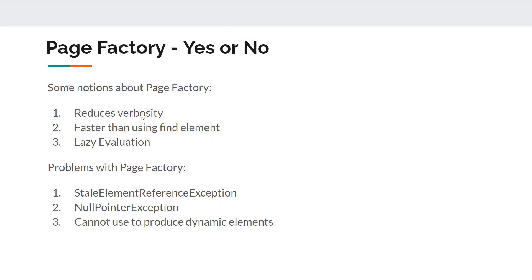I don't understand how writing driver.findElement is hard. I can simply create a reusable method like click or sendKeys and wrap everything inside — I can directly call click. I really don't understand how Page Factory reduces verbosity. Calling driver.findElement is not actually a tough task; even if it is, I can create a simple reusable page action method and wrap all the driver.findElement code inside that. So this is not a true statement.